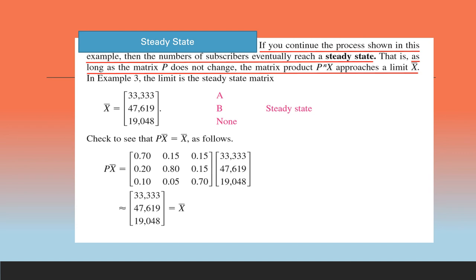Yes, we are finding that P X bar is the same as the X bar and hence this X bar, which is 33,333 in company A, 47,619 in company B and 19,048 in no cable TV will be the steady state.